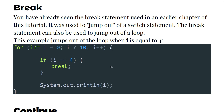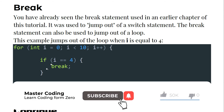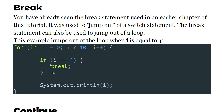So if we have int i equal to 0, and this loop will execute while i is less than 10, incrementing by 1 each time, the loop will print out i each iteration. Notice that if i equals 4, the break statement will be executed. So the loop will print i from 0 to 9 normally, but when i reaches 4, the break statement takes place.